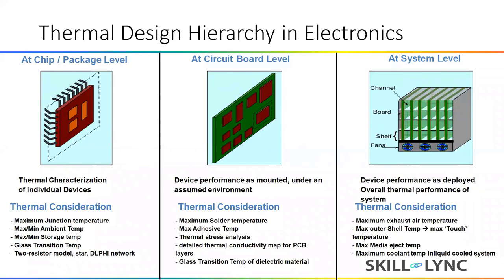At the system level, we don't look at chip-level or board-level details. We look at the overall thermal performance of the system — what kind of cooling solution is required when the PCB is mounted, whether we need more conduction or more convection. We also have to consider the maximum exhaust temperature. As per certain design guidelines for system-level design, the inlet and outlet temperature difference should not be more than 10 degrees.